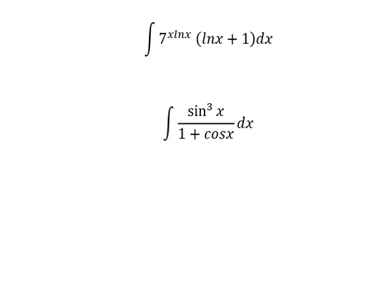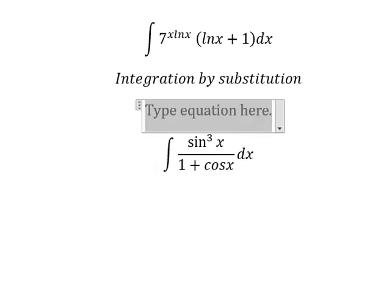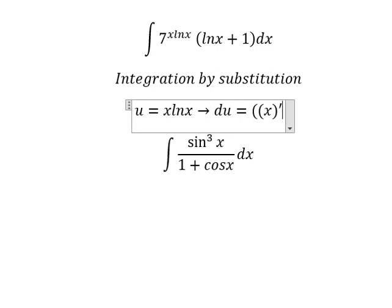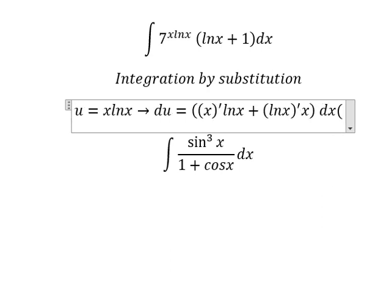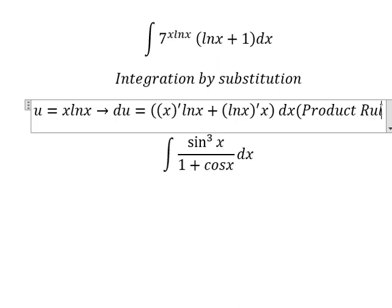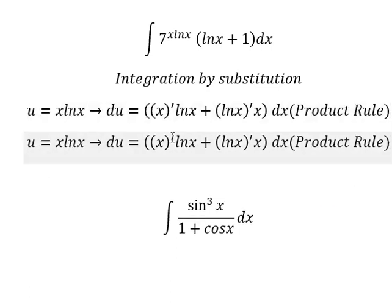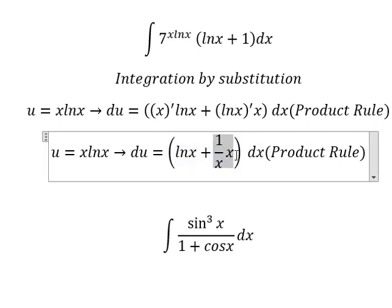For question number two, we again use integration by substitution. I will let u equal ln(x) times x. We need to find the differential for both sides. Since this involves the product rule for differentiation, we get 1 plus 1 over x, so du equals that expression.